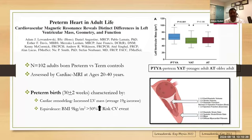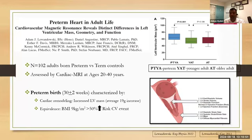One may ask: why are these preterm births getting cardiac failure? Thanks to Adam Lewandowski and his Oxford team, we learned what happens to the heart of the preterm young adult. This landmark paper published in Circulation helped open this Pandora's box. About 100 preterm-born young adults at 20 to 30 years of age were assessed by cardiac MRI. The preterm-born ELBW mass was higher than those born at term.